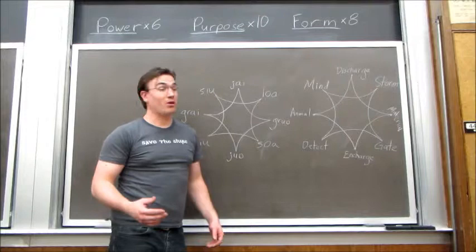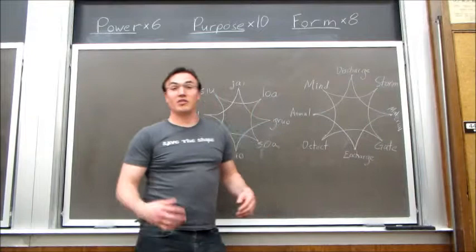The Loa syllable allows the spell to take the form of a storm, a tornado, a rain of fire, or a rain of acid, or an earthquake.